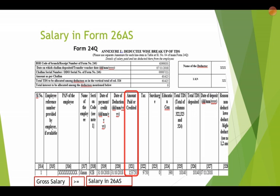Why would a difference arise? In some cases, tax has been deducted for only six months for a person. So the salary in 26AS will be monthly salary multiplied by six only, whereas in Form 16 and in the ITR the total salary for 12 months would be there. That is why this difference arises, and that is why the department has moved toward a detailed Form 16, Form 24Q, and also detailed salary information in ITRs.